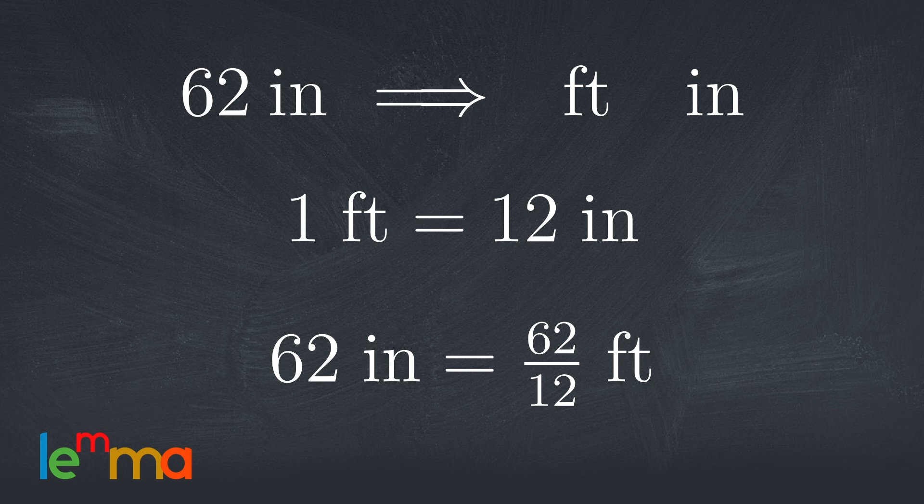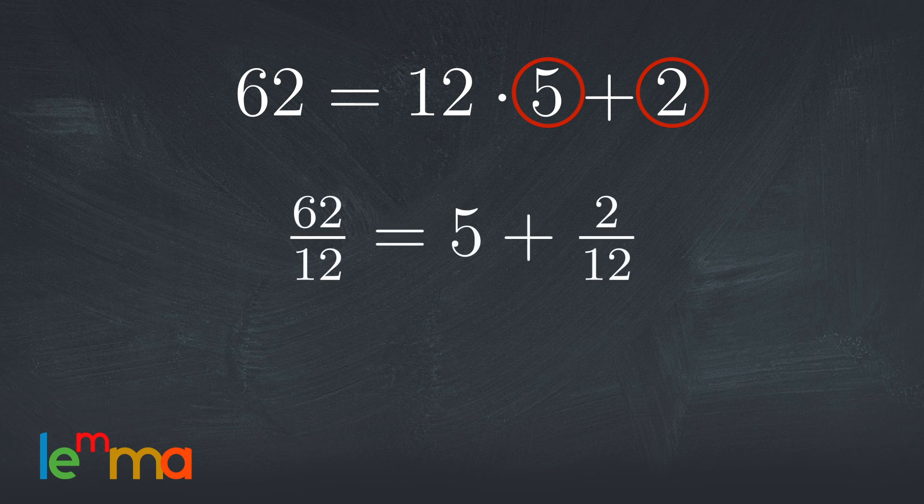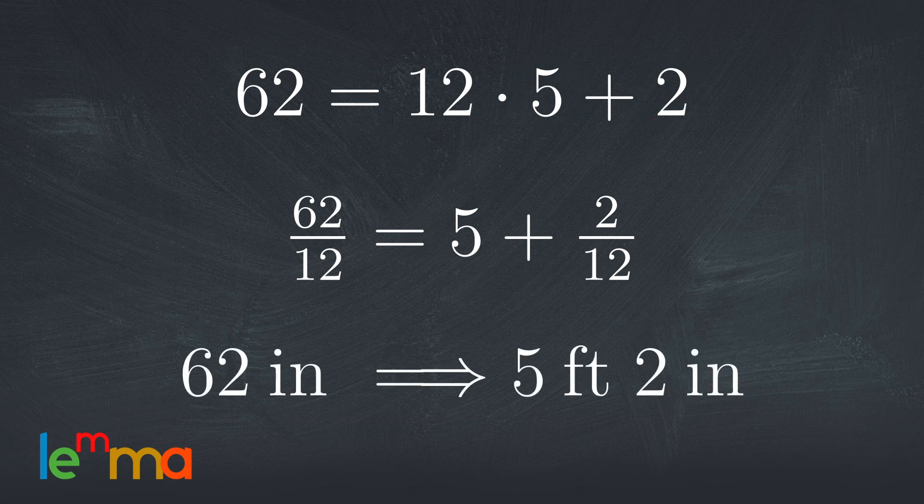To get there we must convert the simple fraction 62 over 12 to a mixed number. 12 fits into 62 five times with a remainder of two. Therefore 62 over 12 is 5 and 2 twelfths. So it's 5 feet and 2 inches.